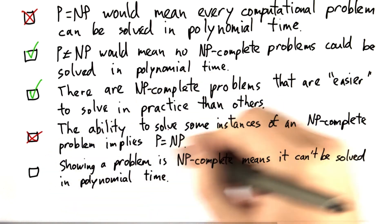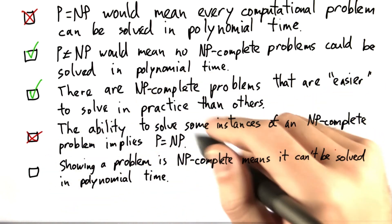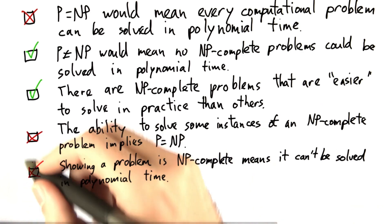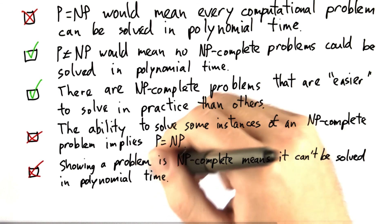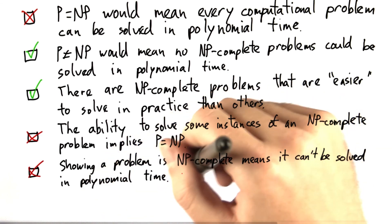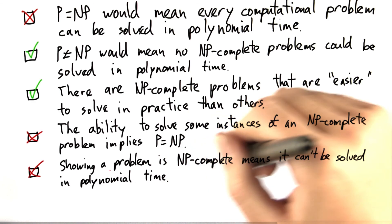And finally, showing a problem is NP-complete means it can't be solved in polynomial time. Well, no. In order to do this, we would actually have to show that P does not equal NP. That's really the problem we're talking about here in not so many words.